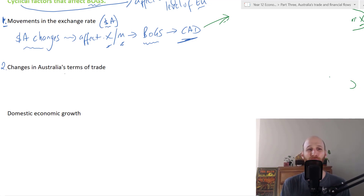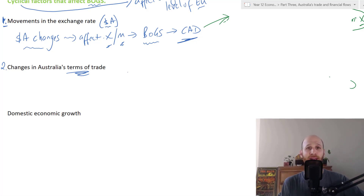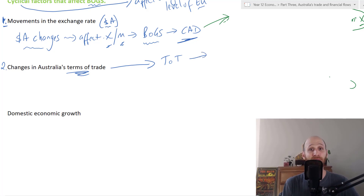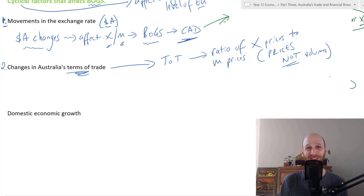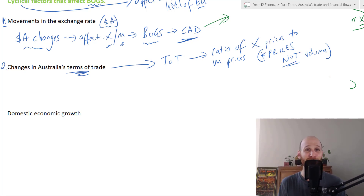Now we're looking at factor number two: changes in Australia's terms of trade. The terms of trade is a separate concept — I've got a separate video you can check out via the card up top. Briefly, the terms of trade — we can abbreviate this to ToT — refers to the ratio of export prices to import prices. It shows us how much Australia gets for its exports versus how much it pays for its imports. The terms of trade is about the price of exports and imports — it's not about volumes.